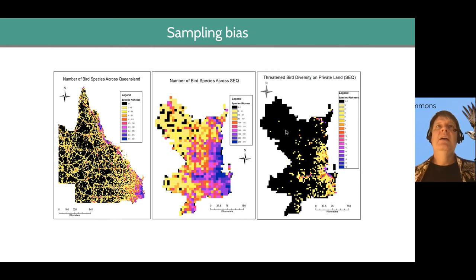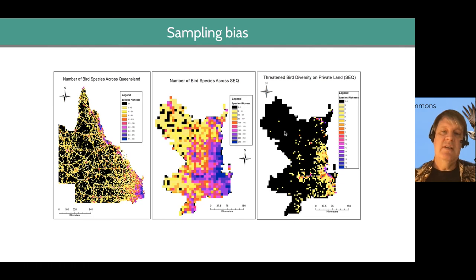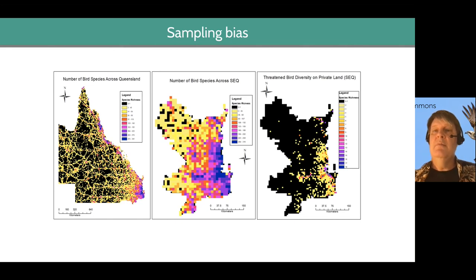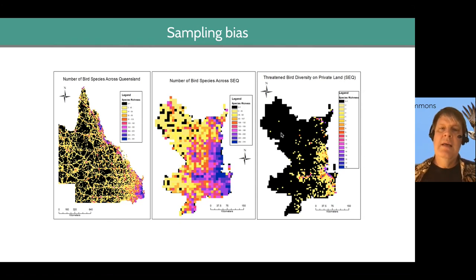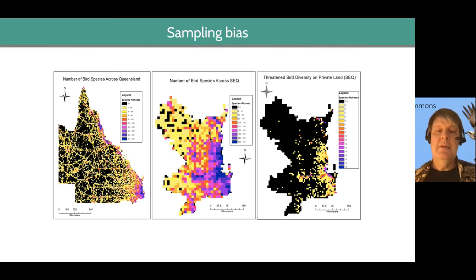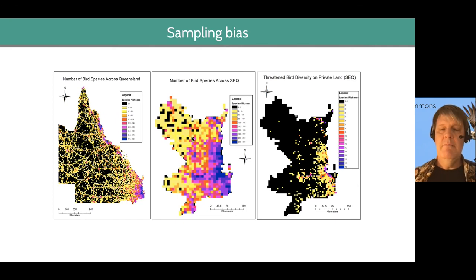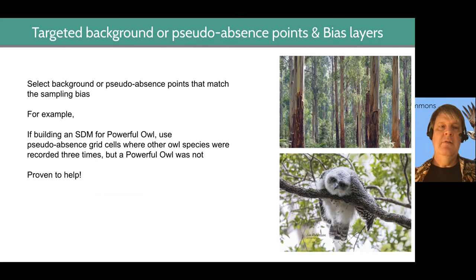One of the reasons we need some of these complex modeling techniques is to predict into these areas. Would it make more sense to buy a really big property out here for my $100 million, or do I really want to buy a small property where there's a lot of threatened birds we know about? We can predict into these areas using species distribution modeling techniques, but we can do it much better if we account for the sampling bias in the data.